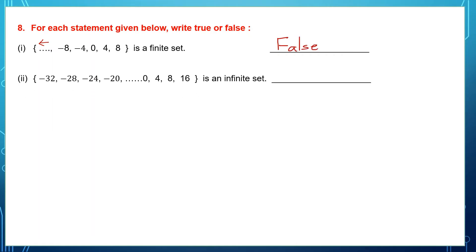Second one: we know the starting number is minus 32, dots in between indicate more numbers, and we know the last number is 16. The statement says this is an infinite set, which is false because this is a finite set. So this statement is false.